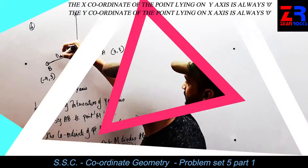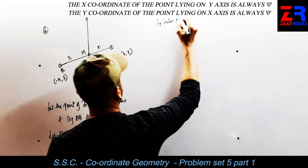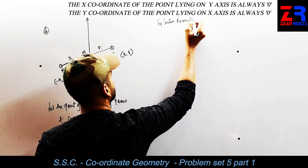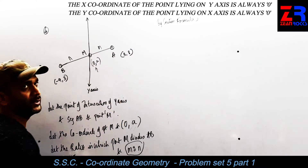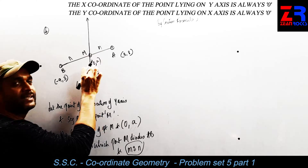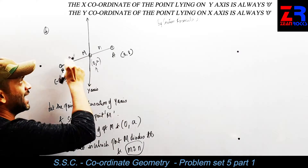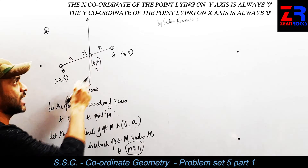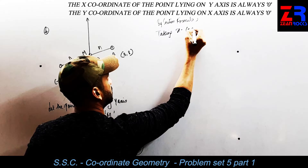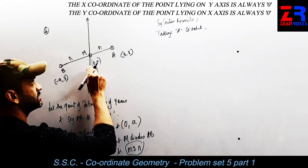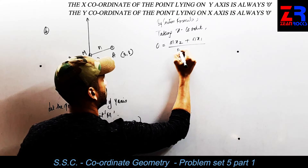I will use the section formula of internal division. I will use the x-coordinate formula since the x-coordinate answer is given — that way I can find the missing values m and n. Taking the x-coordinate formula: 0 equals m·x2 plus n·x1 upon m plus n.